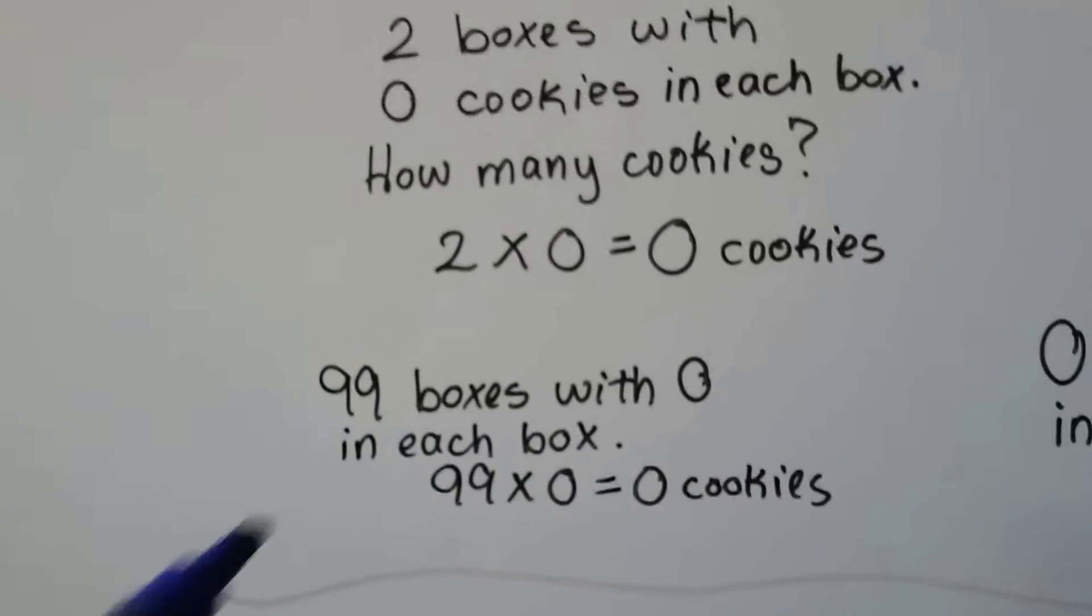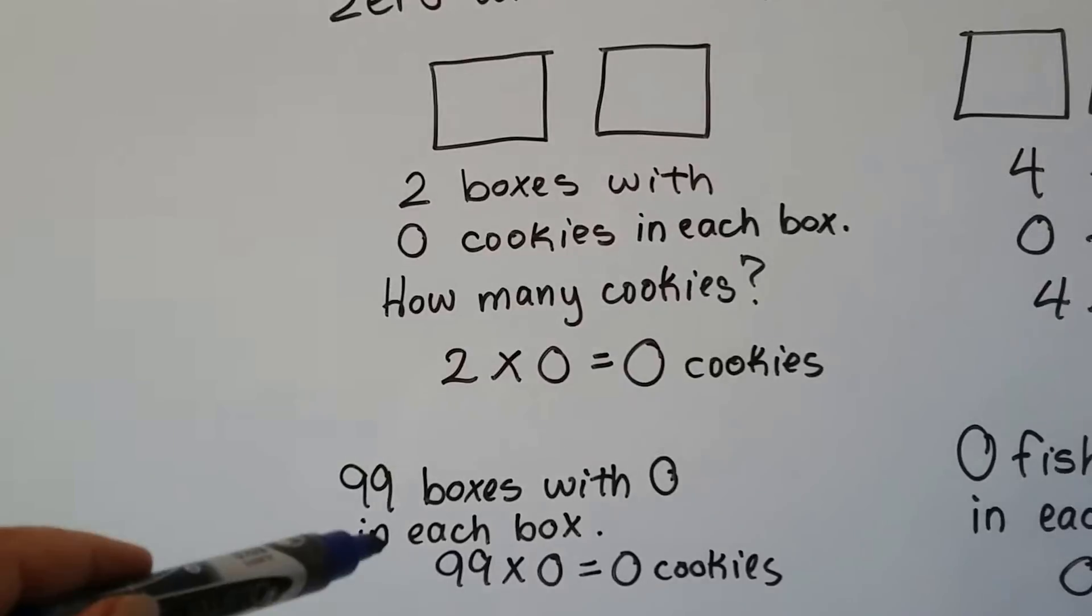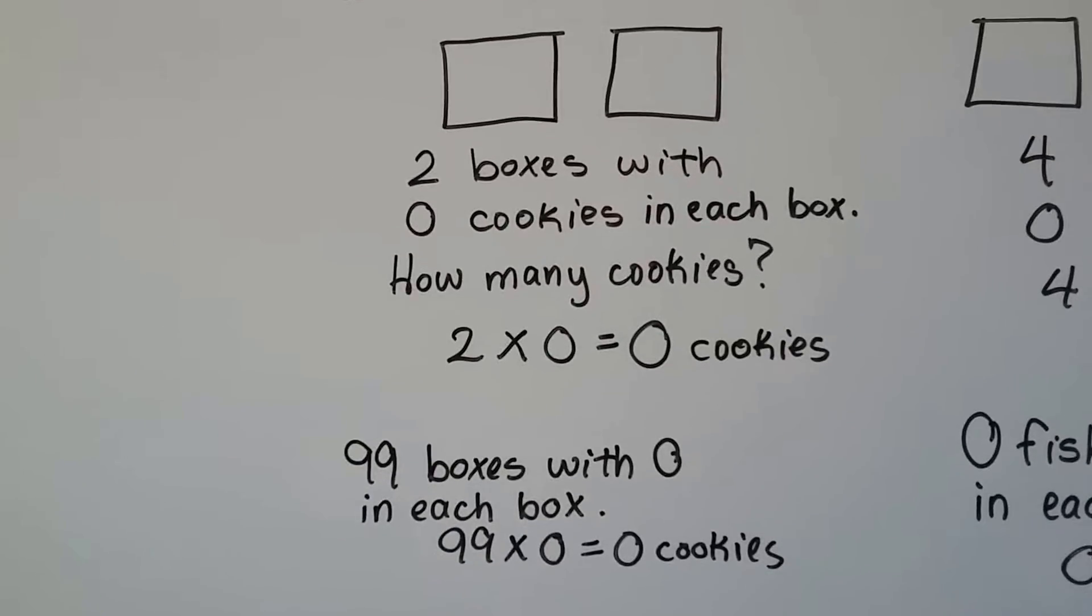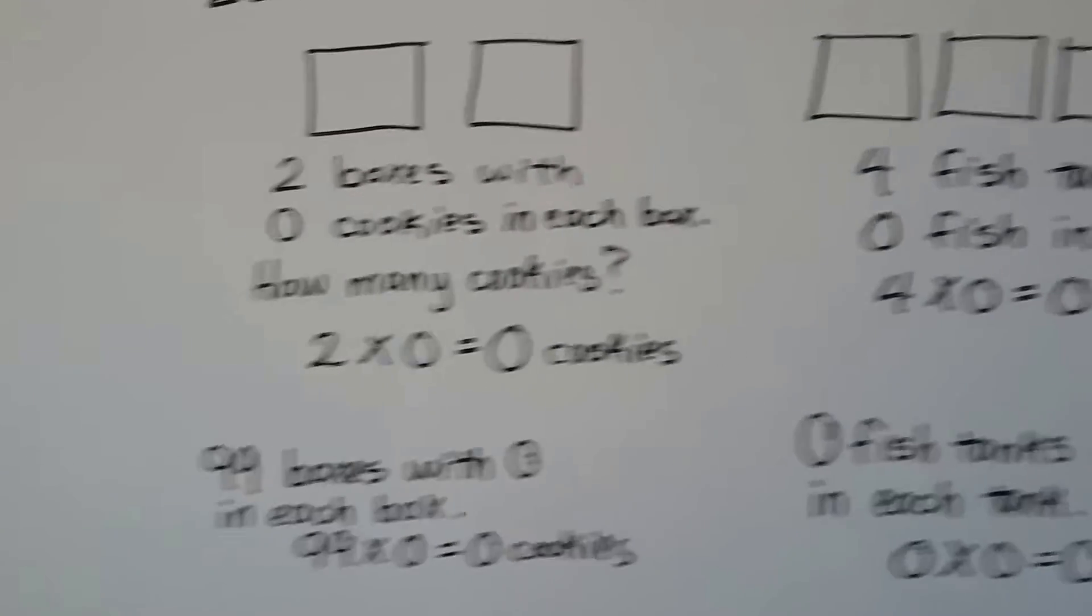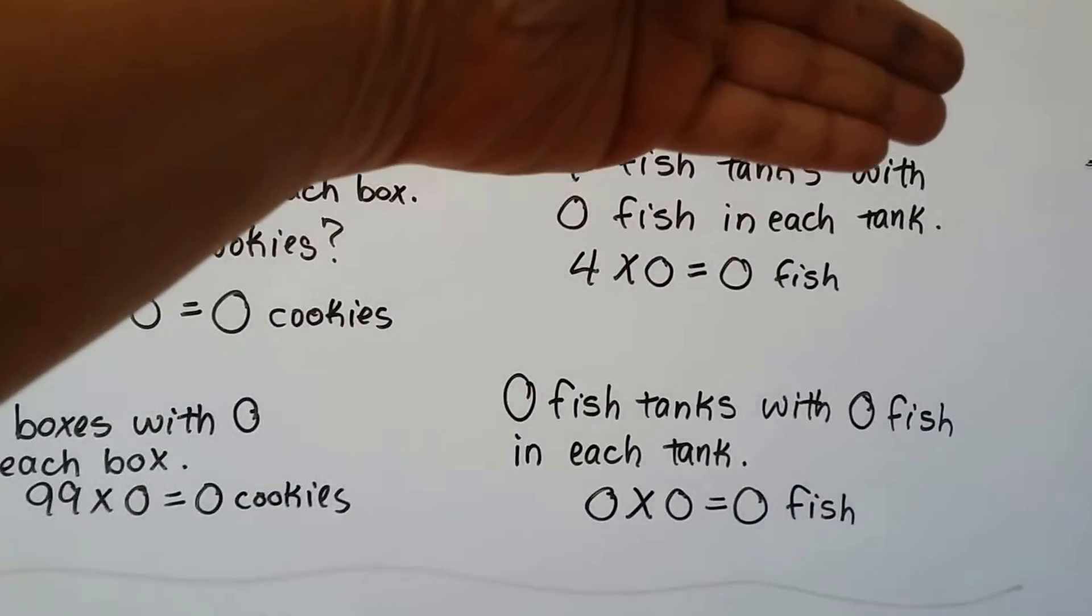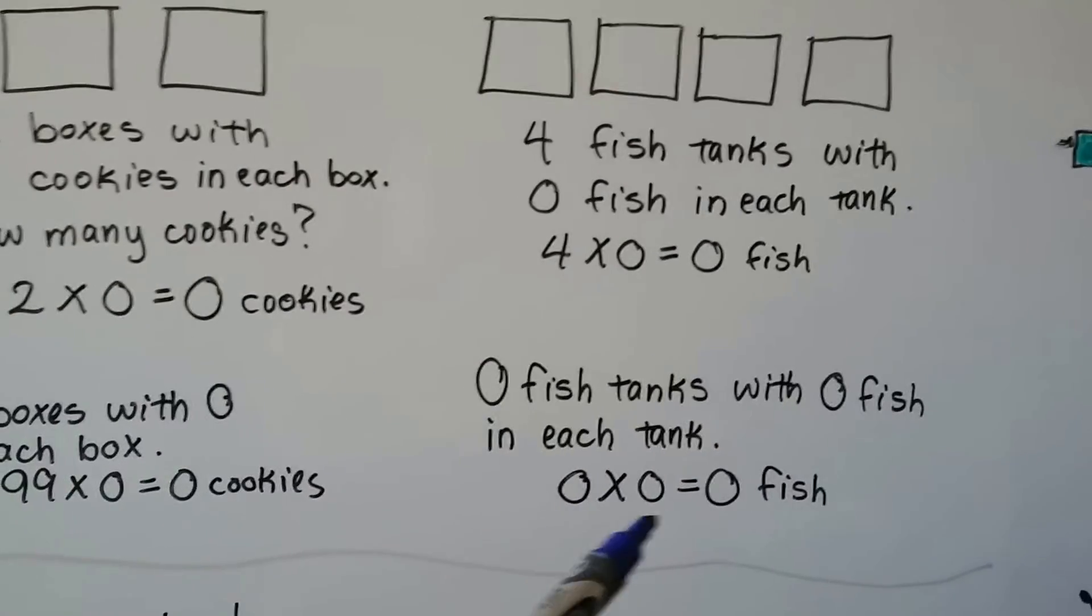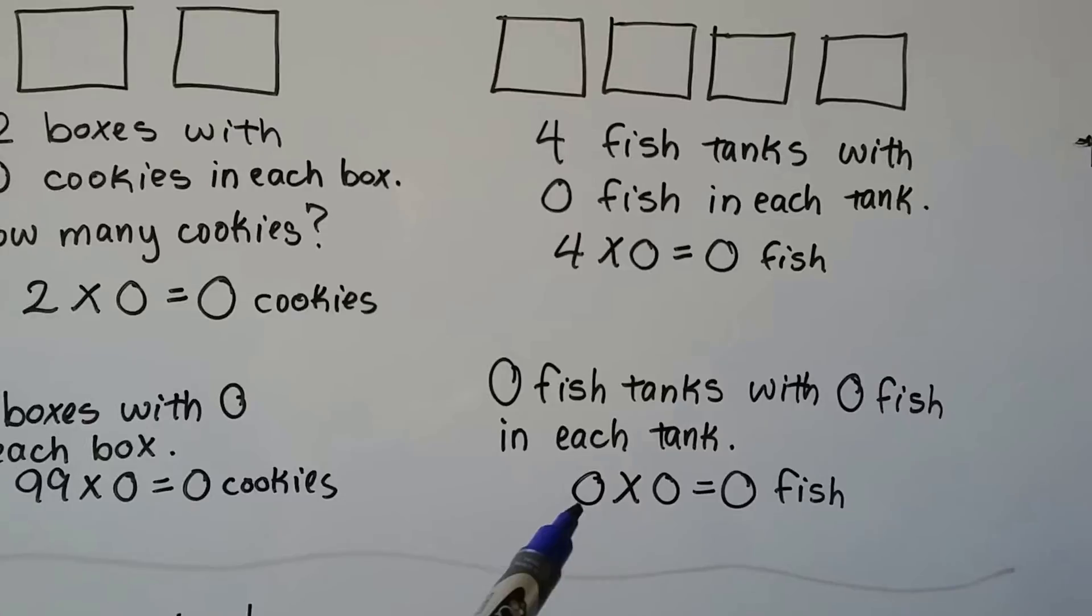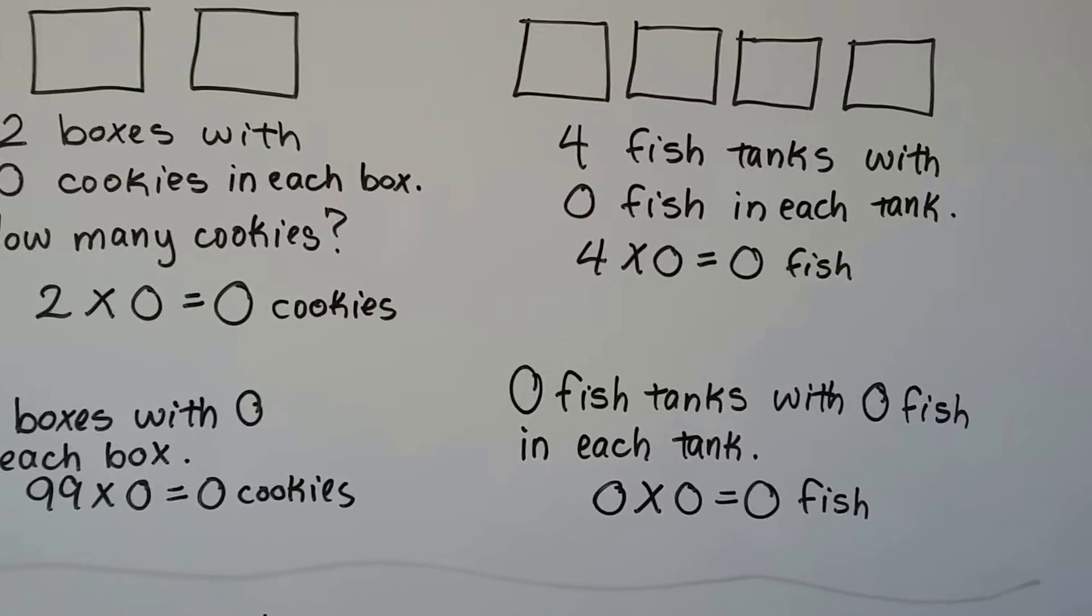If we had 99 boxes of cookies and all 99 boxes had 0 cookies in them, we'd still have 0 cookies. And if we had 0 fish tanks, if there were no fish tanks with no fish in them, well, 0 times 0 is 0. If you have no groups with nothing in each group, you have nothing.